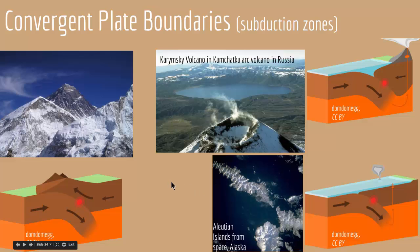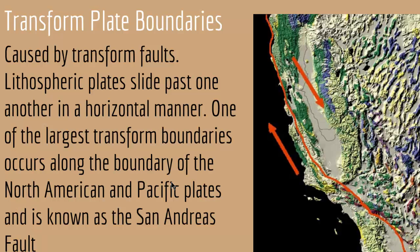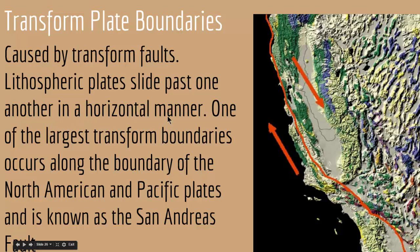Finally, we have transform plate boundaries, caused by transform faults. As shown here, this is the western part of the United States — California. When two plates pass by each other, we get transform plate boundaries. Lithospheric plates slide past one another in a horizontal manner. One of the largest transform boundaries occurs along the boundary of the North American and Pacific plates and is known as the San Andreas Fault. In transform boundaries, plates are not going underneath each other or getting away — they are simply passing each other.